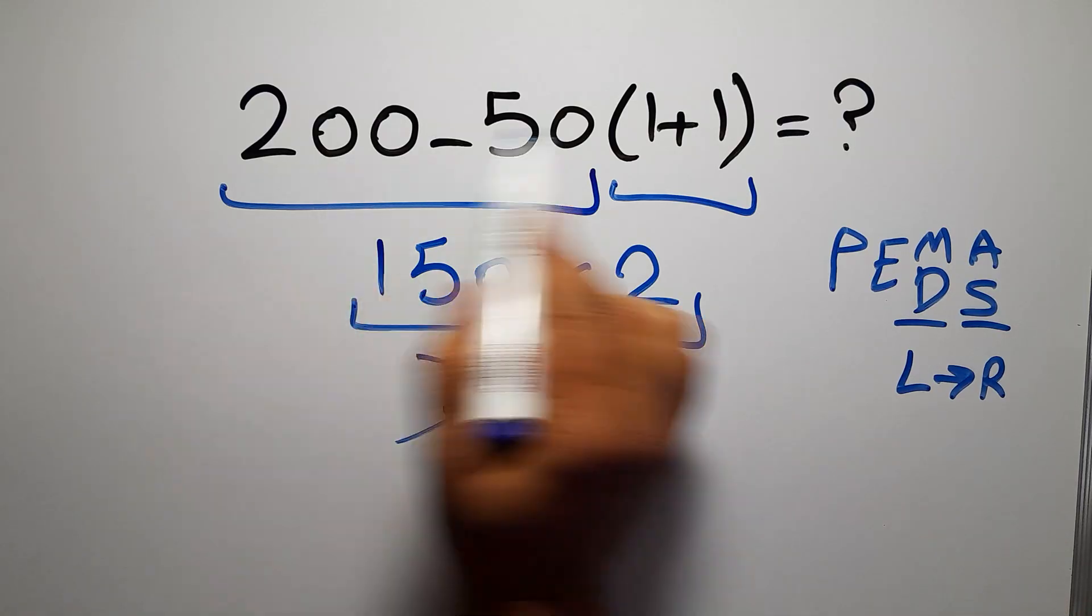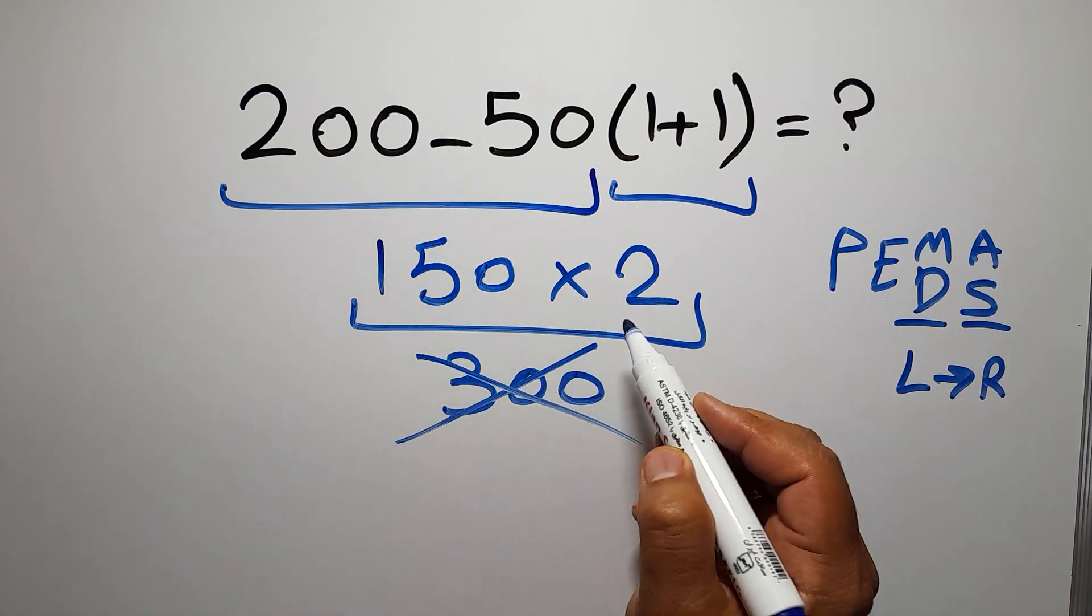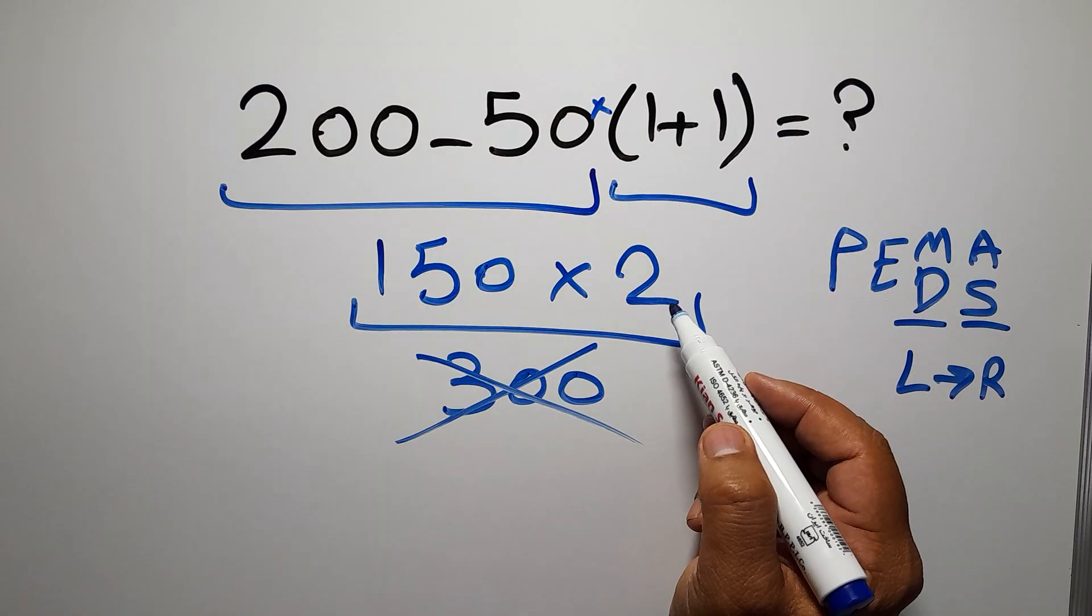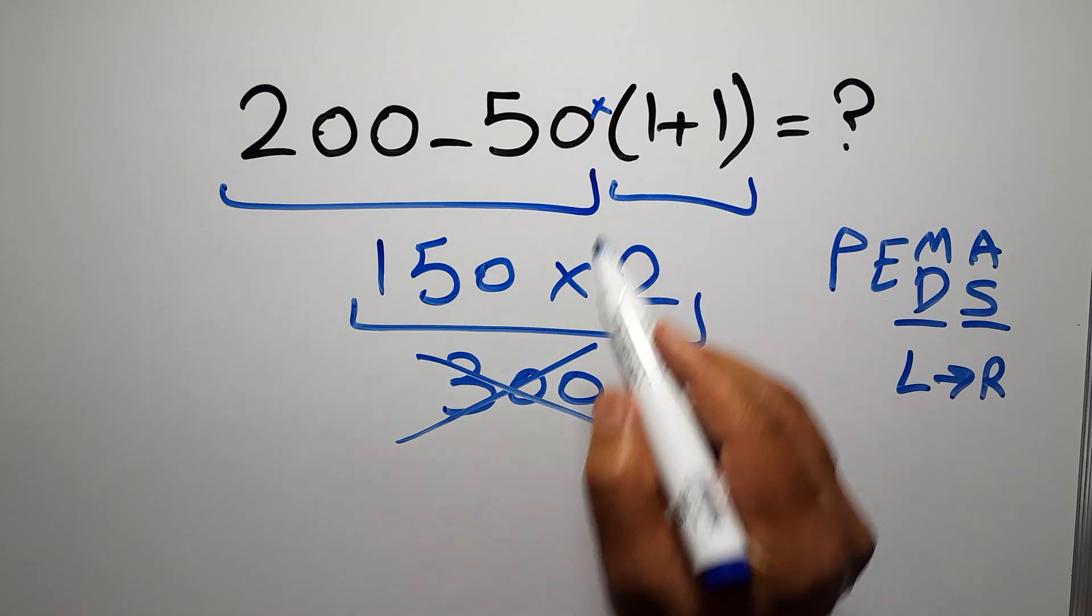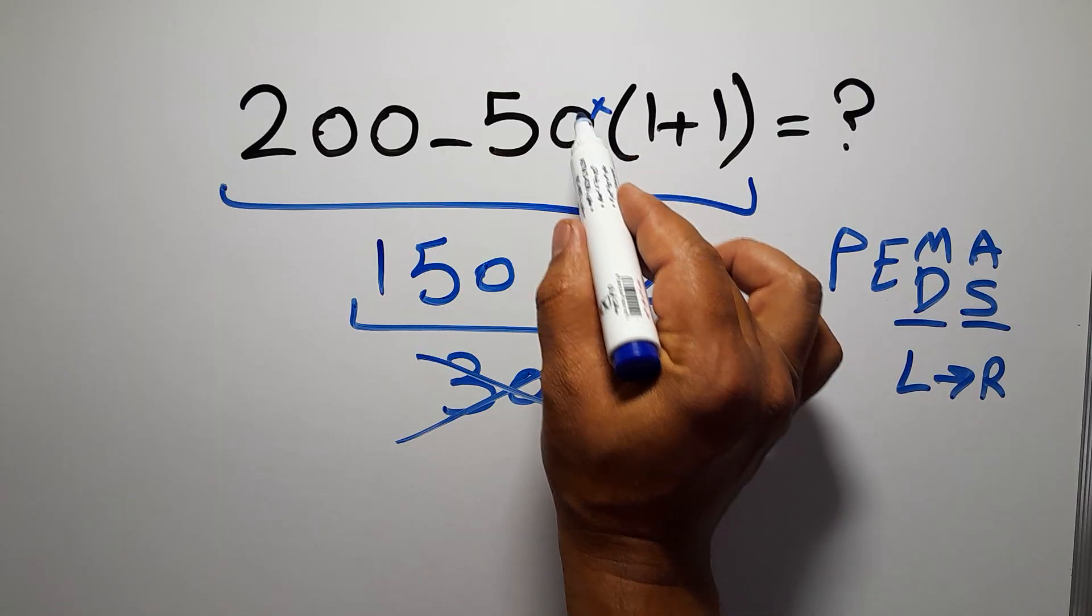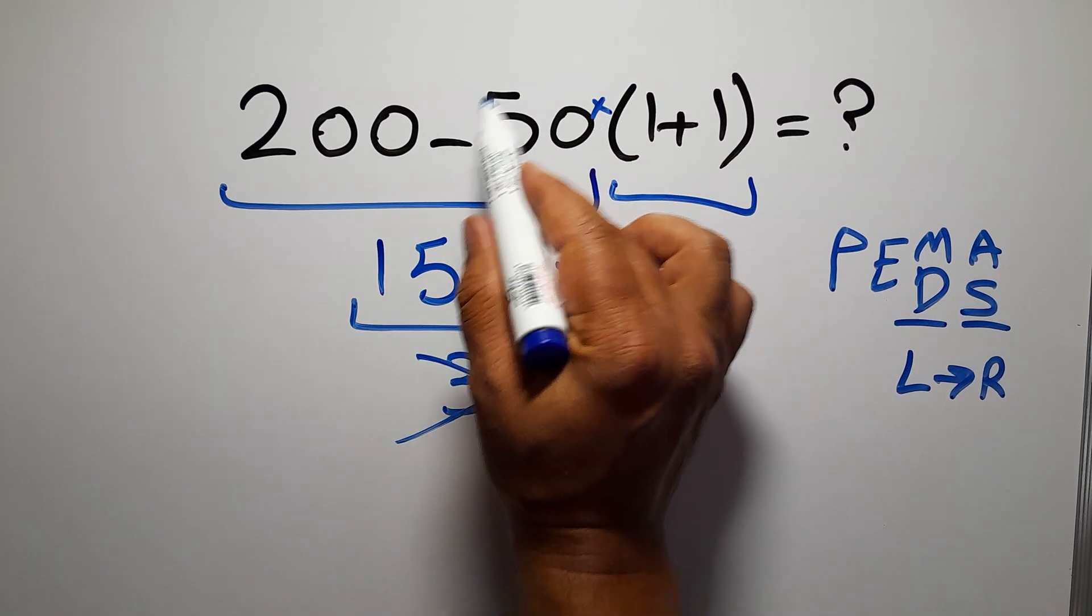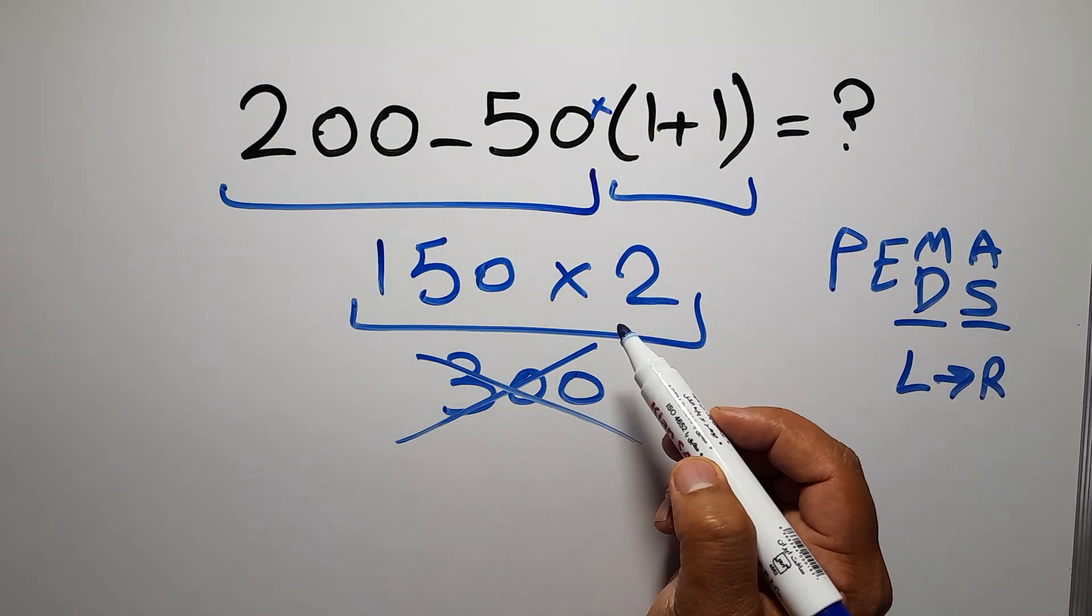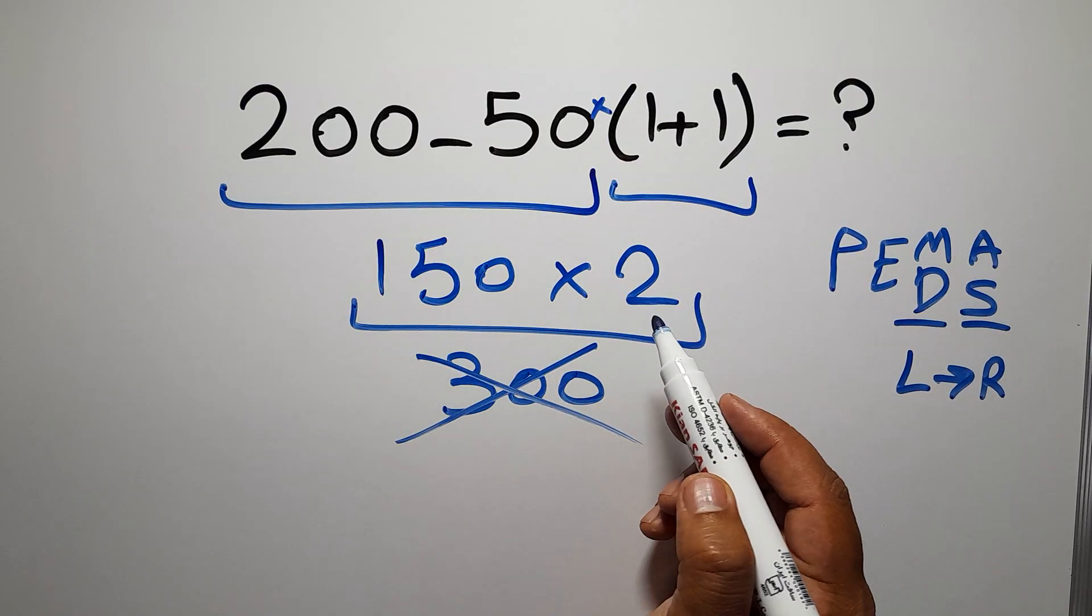Here in this expression, we have 1 subtraction, 1 multiplication, and these parentheses. Inside these parentheses, we have 1 addition. We need to pay attention that here we have a multiplication, because in mathematics, when a number is placed next to parentheses, it means multiplication, and we usually don't write the multiplication sign for brevity.